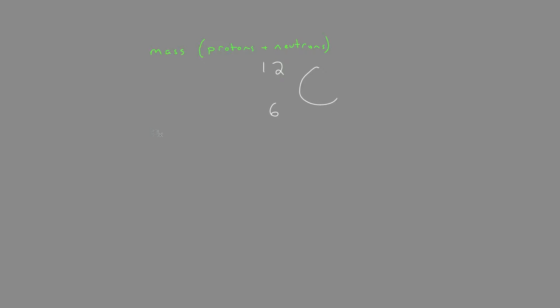And the atomic number is just the number of protons. And this is actually how the periodic table is structured, according to the number of protons of the elements, from 1 to well over 100.